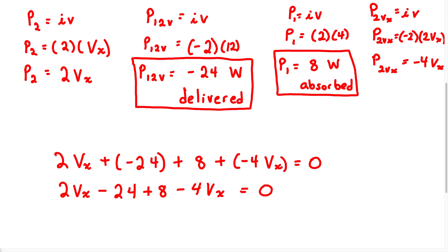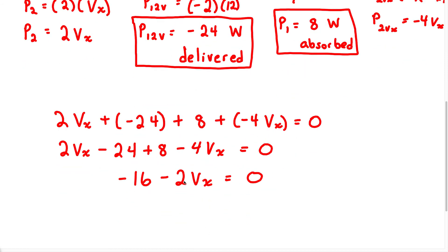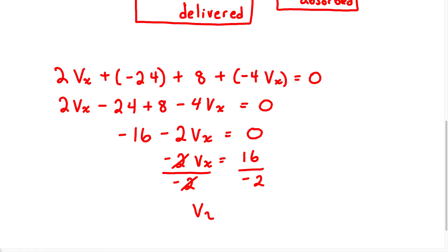We combine like terms. Negative 24 plus 8 gives us negative 16, and 2Vx minus 4Vx gives us negative 2Vx. So we have negative 2Vx minus 16 equals 0. Solving for Vx: negative 2Vx equals positive 16. We divide both sides by negative 2, so Vx equals negative 8 volts.